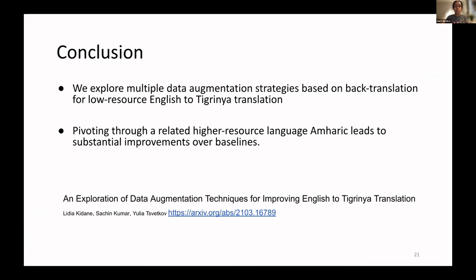In conclusion, we explored multiple data augmentation techniques for low resource English-to-Tigrinya translation, and pivoting through a higher resource language — Amharic — and creating more auxiliary sentences gave us the best performance. We achieved better results with this kind of back translation. This is just initial work, but there is a lot of research still needed to create better back translation approaches. This paper was published at the Africa NLP Workshop, and you can find it at the link provided.